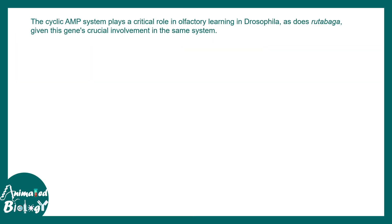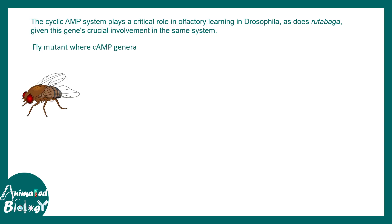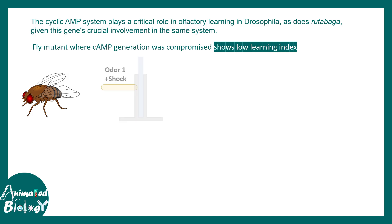Cyclic AMP signaling is really important for many physiological aspects. One important example is the olfactory learning of Drosophila. It turns out that mutants which fail to generate cyclic AMP show a compromised learning index.